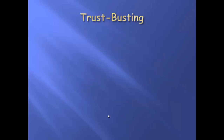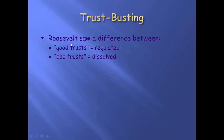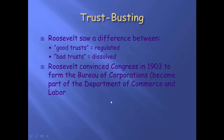Teddy Roosevelt was certainly not in favor of large companies doing things not in the public good. He's going to distinguish between two different ideas of trust. If you forgot what a trust was, it is a form of monopoly — a way for a company to control the pricing on a particular product. He said good trusts are just going to be regulated and we're going to keep an eye on them. Bad trusts — trusts that are doing things that are harming people — will be dissolved. Their companies will be broken up because they broke a law, and you should remember the law: the Sherman Antitrust Act.